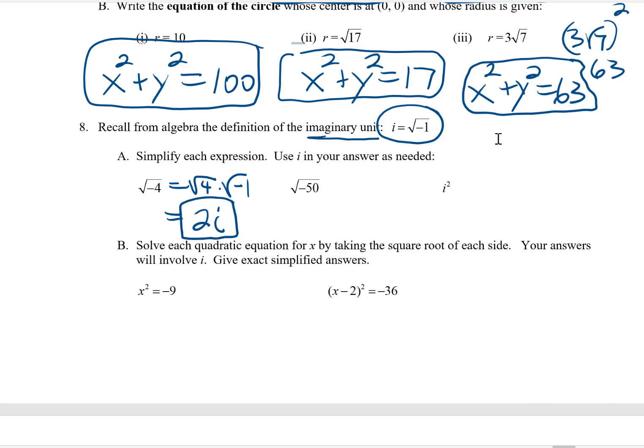For square root of negative 50, again, I can break the 50 up, as usual, into 25 and 2. And then I've got that extra negative 1. So square root of 25 is 5. Square root of negative 1 is i. The 2 gets left behind. 5i√2.